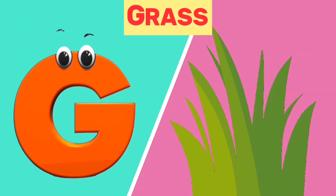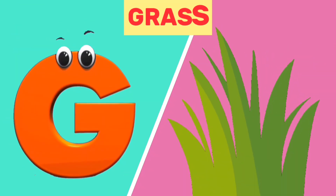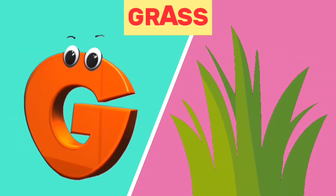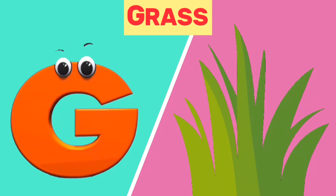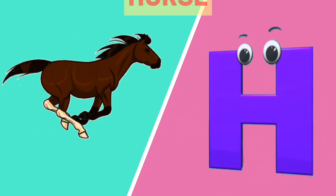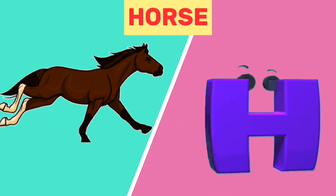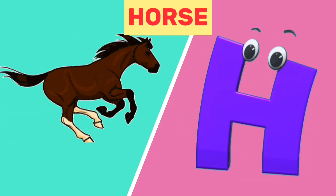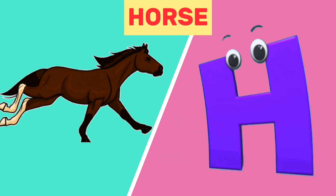G is for grass. G, g, grass. H is for horse. H, h, horse.